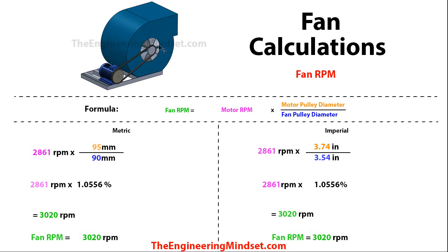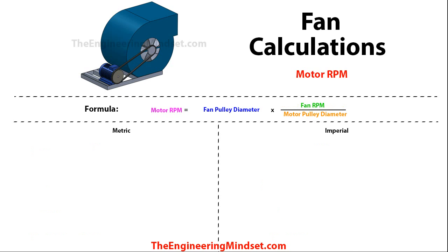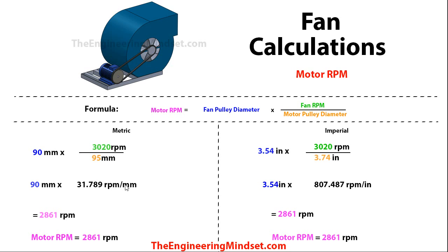We can also calculate the motor RPM using this formula: the motor revolutions per minute equals the fan pulley diameter multiplied by the fan revolutions per minute divided by the motor pulley diameter. Dropping those numbers in, this will come out at 2,861 RPM on both imperial and metric. Again, you can calculate these or look them up from the manufacturers.